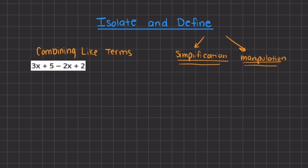The first method we are going to learn is under the simplification umbrella, and that is combining like terms. When we combine like terms, we combine the terms with the same degree and the same type of term. Here we have 3x and 2x, and these two terms have the same variable x with the same degree. We can only combine like terms that have the same degree. So we combine 3x and negative 2x, and we are left with 1 positive x.